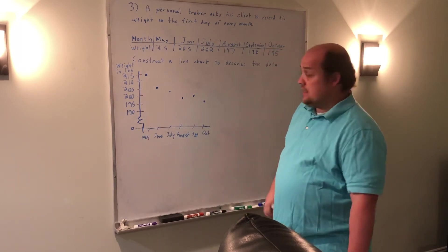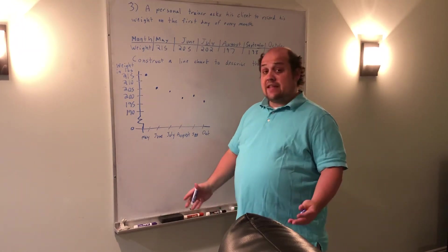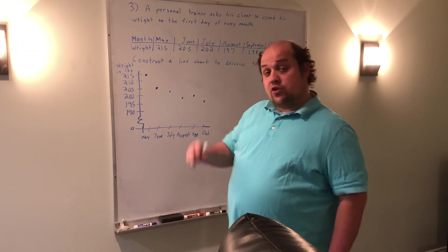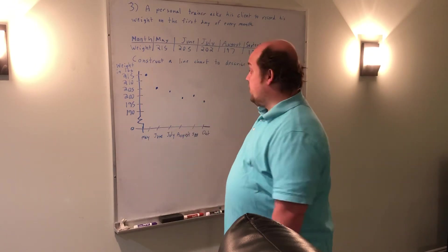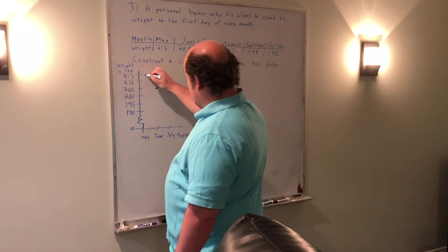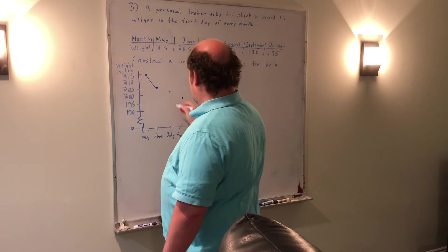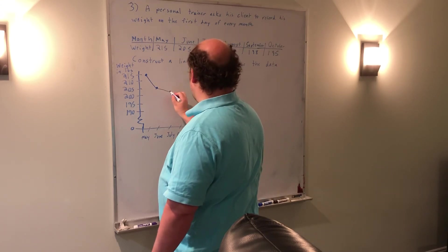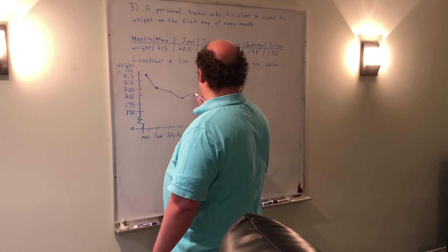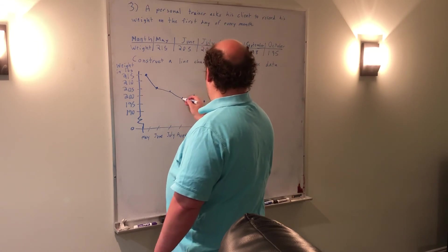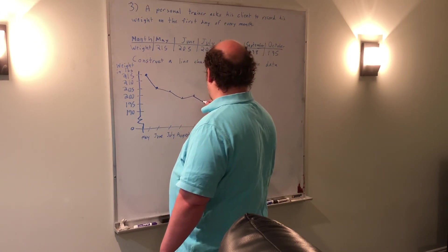Once you've got those points in, each of the data points, you treat it like connect the dots. You want to draw a straight line from each data point to the next. So here's May to June, here's June to July, July to August, August to September, and then September to October.